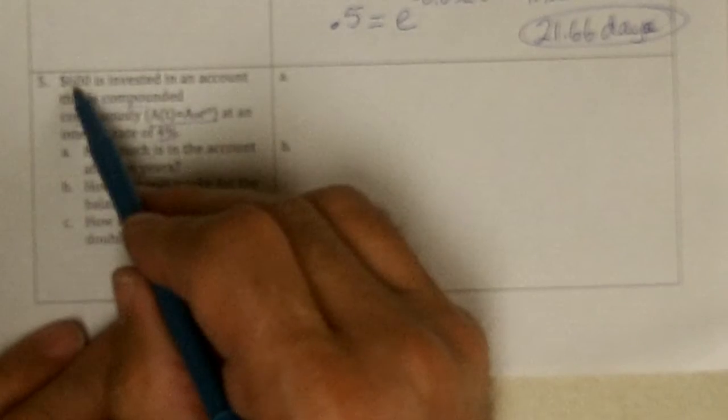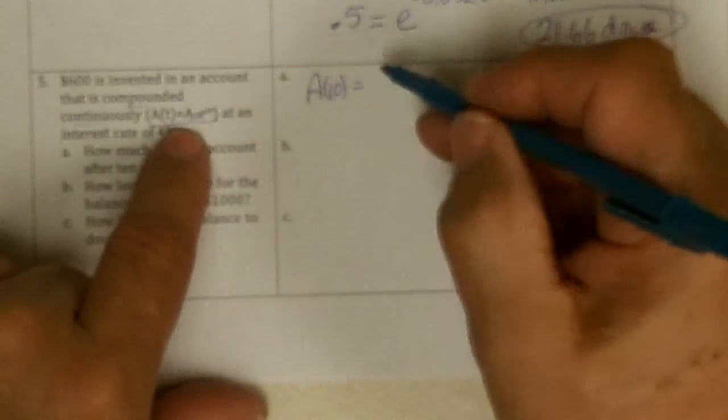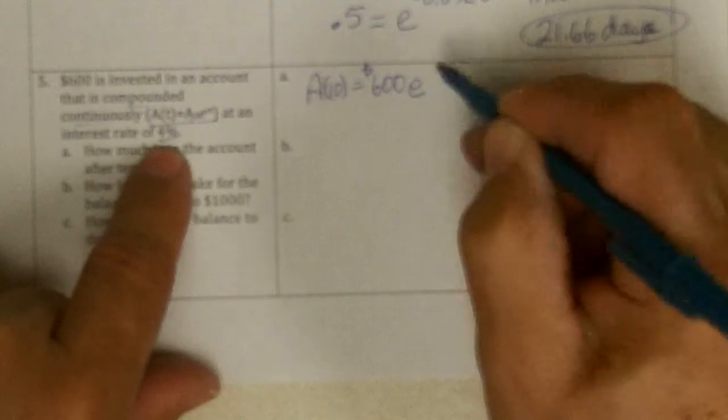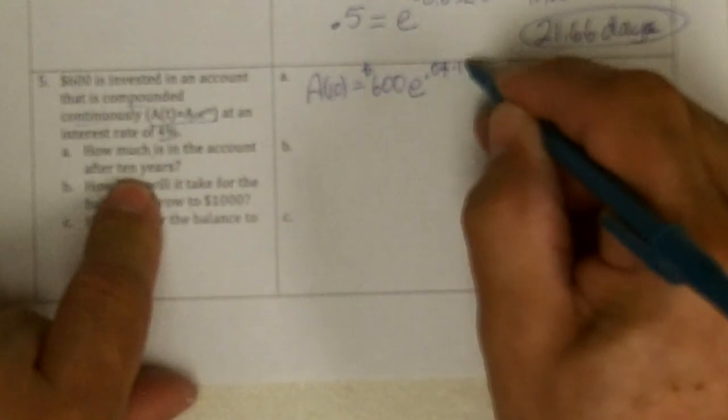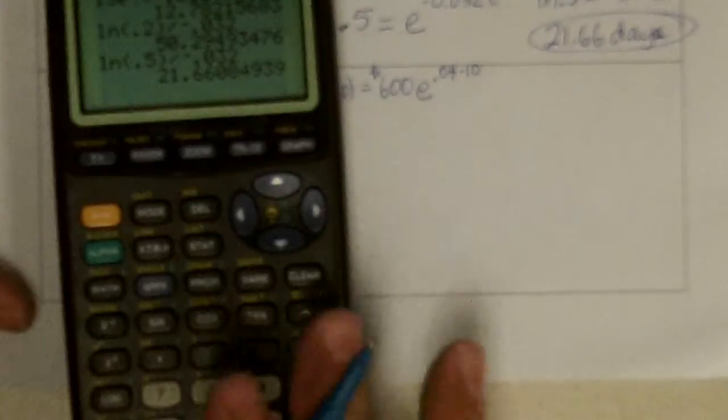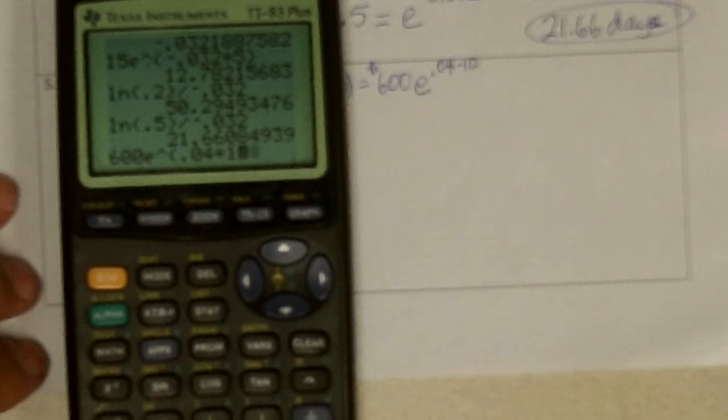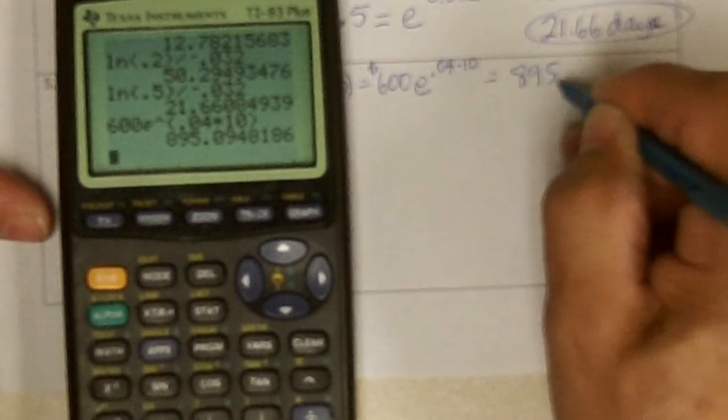So now I'm doing $600 invested compounded continuously, and I gave you the formula, at 4% rate. So how much is in the account after 10 years? So $600 is the initial investment, so the amount after 10 years is equal to the amount at the beginning. E to the interest rate, which is 4%, or 0.04 in decimal, that you're supposed to use. And then t is 10 years, times 10. So I'm just going to simply go, $600, e to the 0.04 times 10. And I get, there would be $895.09.